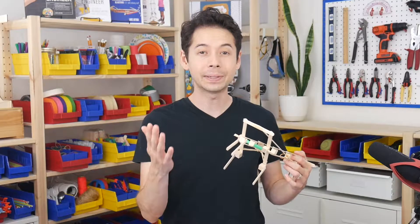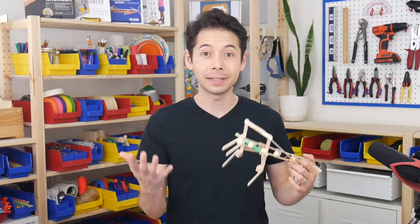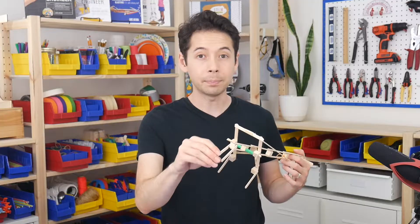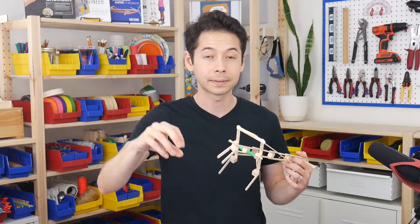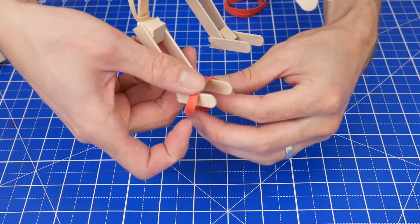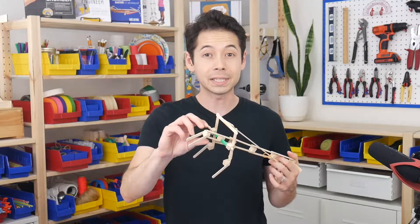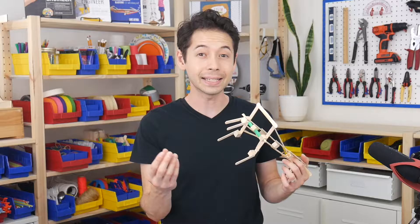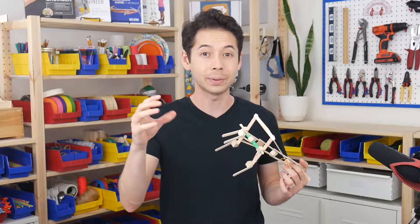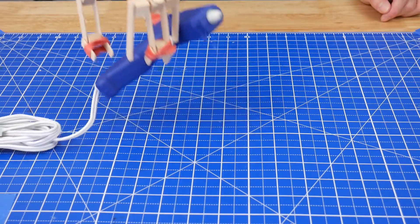And the second thing that you can experiment with is how much grip the hand has, especially around the points where the fingers come together. For example, you could wrap rubber bands around the fingers or glue on some craft foam or even just gluing on bits of a hot glue stick. Anything that has a little bit of rubberiness to it that's going to help grip onto your object so that they don't slip out.